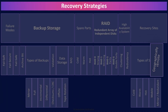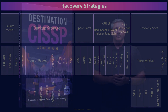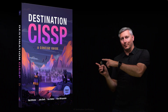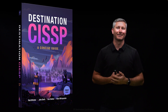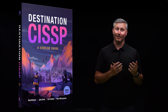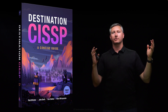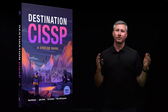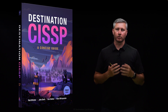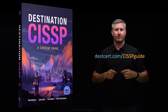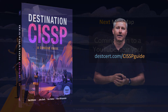And that is an overview of recovery strategies within Domain 7, covering the most critical concepts you need to know for the exam. If you're looking for an in-depth CISSP study guide, you should check out our book, Destination CISSP: A Concise Guide. We wrote the book to be as concise as possible and engaging to read, with lots of tables, diagrams, and summaries. We cover all of these recovery strategies in detail, along with other major topics you need to know for the exam. You can find out more details at destcert.com/CISSPguide.